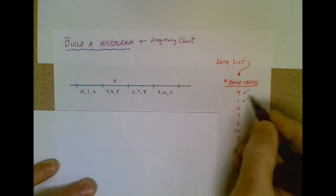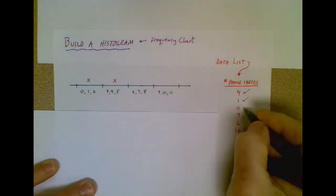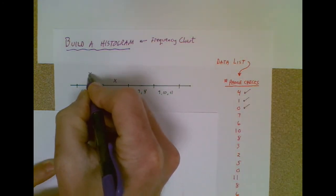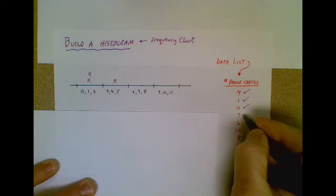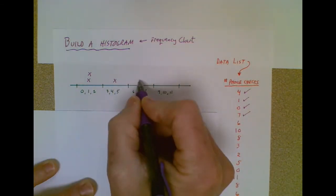This person checked their phone once. I put them in the category of zero, one, and two. And we keep building, or basically taking this data piece and putting it into the category.